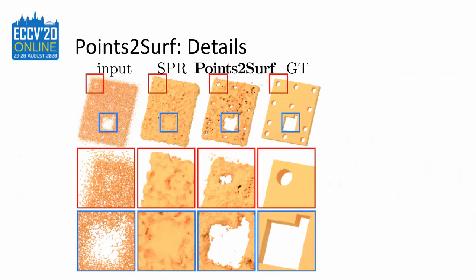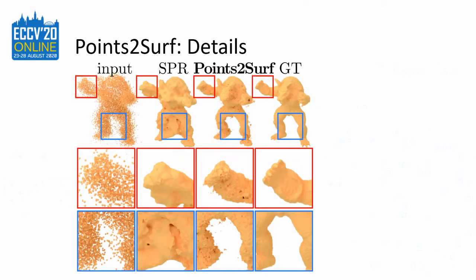Let's now compare Poisson reconstruction with our method in detail. SPR closes the holes and produces a bumpy surface. Points to Serve can even reconstruct the small holes but produces some topological noise. With strong noise, SPR loses more features and fills even large gaps. Again, Points to Serve is more accurate but produces topological noise.